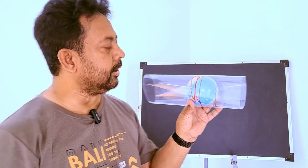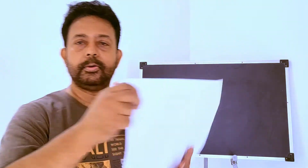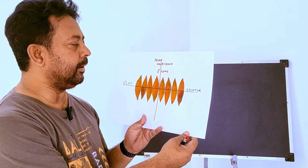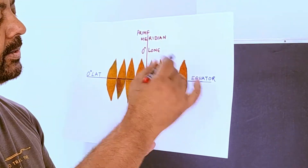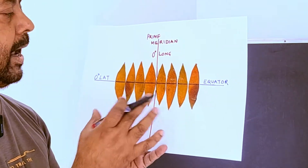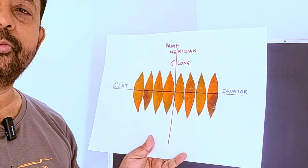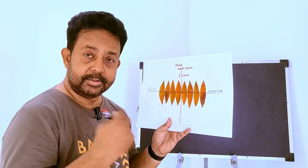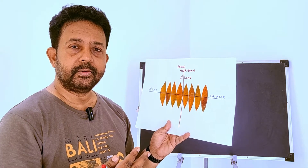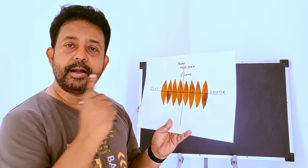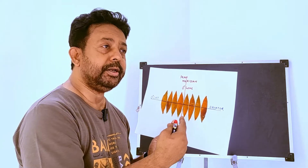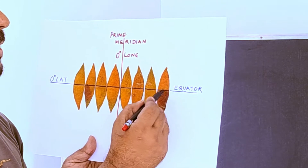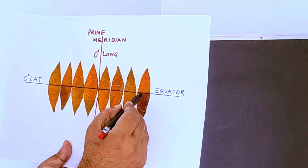This looks similar to what I showed you in my last video — the orange peel. You take a slice of the globe and then you arrange it to have a UTM projection. Now, in UTM projection, you have to make 60 such slices. Remember, a globe is 360 degrees — if you make 60 slices, then each slice will be 6 degrees apart.